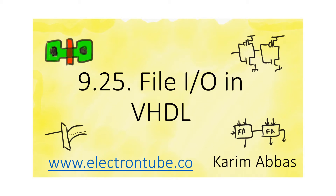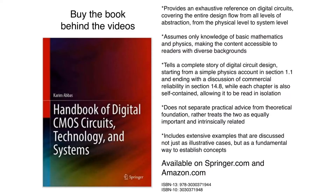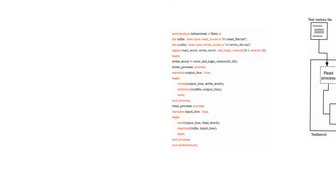VHDL allows you to access files for reading and writing from the computer in which the work library resides. File access is very useful specifically in testing situations, but there are a bunch of caveats you have to take care of while using files in VHDL, specifically as far as synthesizability is concerned.